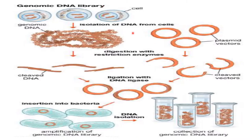Now what are the steps involved in constructing a genomic DNA library? First, we have to isolate the genomic DNA from the cell. Then we digest this genomic DNA with a restriction enzyme, and the plasmid into which the gene of interest will be inserted is also digested with the same restriction enzyme. Then the DNA fragments from the whole genome are inserted into the plasmid with the help of DNA ligase enzyme, producing recombinant DNA. This plasmid is then transformed into bacterial cells where amplification of the genomic DNA library takes place.